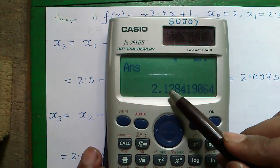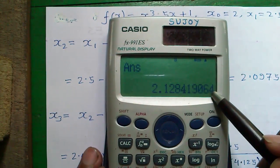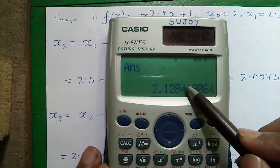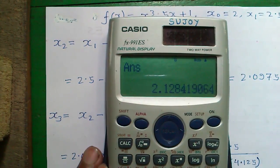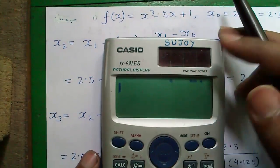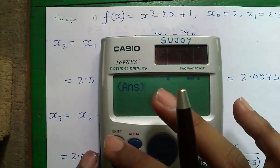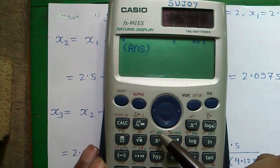So our answer was 2.128419064. We truncated the value to 2.1284. But the actual value is this. And if we program this, for q press shift and this button.